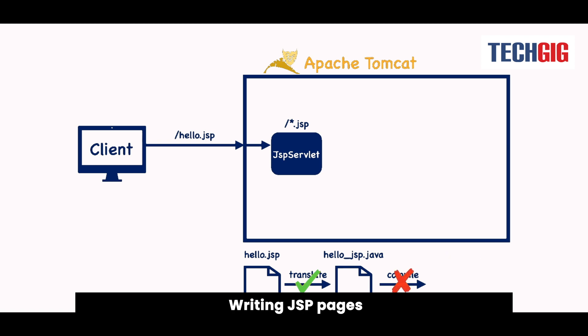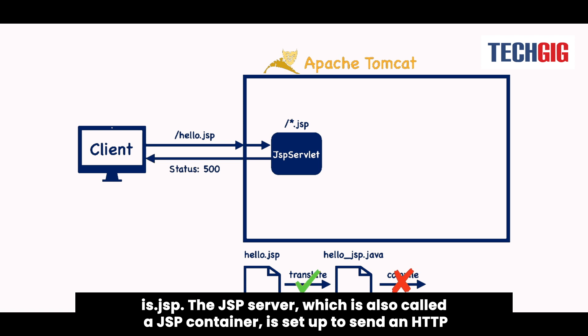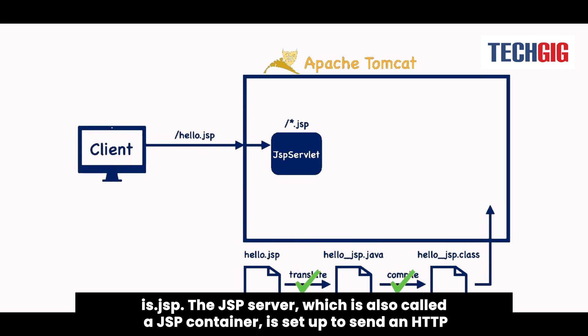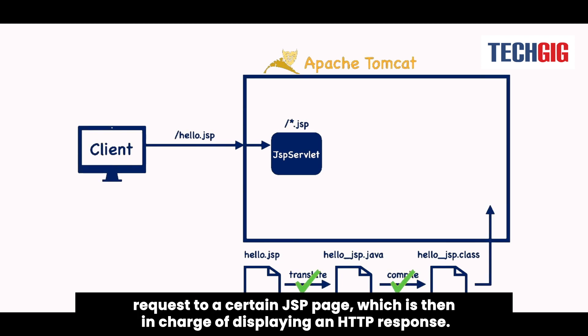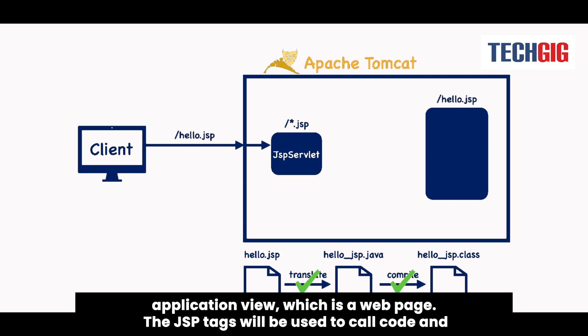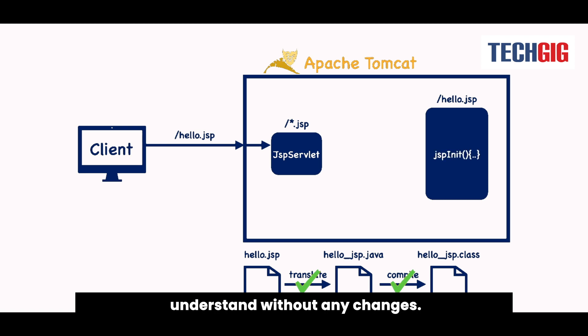A simple JSP page has HTML markup and JSP tags inside it. The file extension of a JSP file is .jsp. The JSP server, also called a JSP container, is set up to send an HTTP request to a certain JSP page, which is then in charge of displaying an HTTP response. When the request comes in, the server reads the file and turns the HTML into the application view, which is a web page. The JSP tags will be used to call code and data on the server. The end result of a JSP is plain HTML that the client browser can understand without any changes.